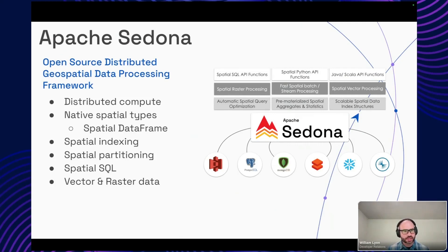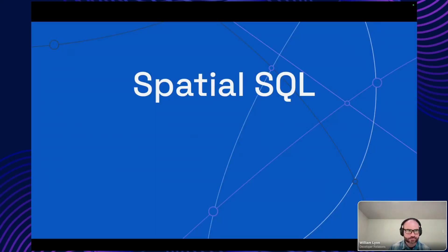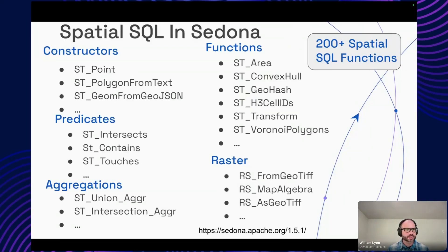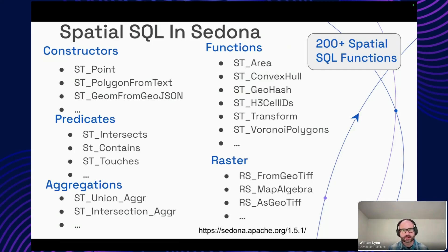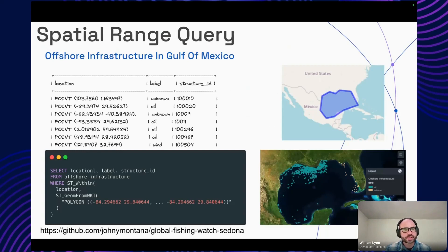Apache Sedona adds spatial types, optimizations for spatial queries, and spatial processing functionality to distributed compute frameworks like Apache Spark. Spatial SQL is one of the most common ways to interact with spatial data in Apache Sedona and Wherebots. This is based on the OGC — Open Geospatial Council — SQL access standard that defines ST_ functions: things like constructing a geospatial type, predicates for join clauses, aggregations, and working with raster data. Let's look at some examples of the kinds of spatial queries that Apache Sedona introduces optimizations for.